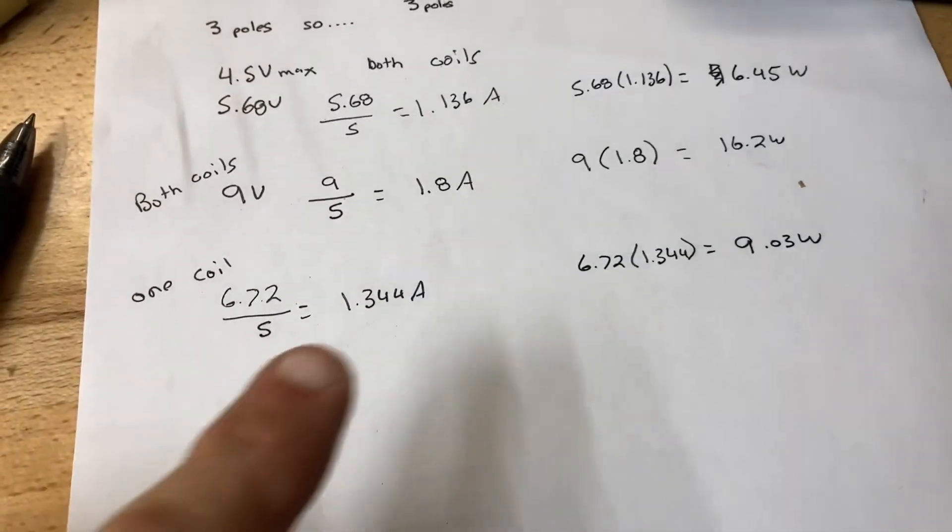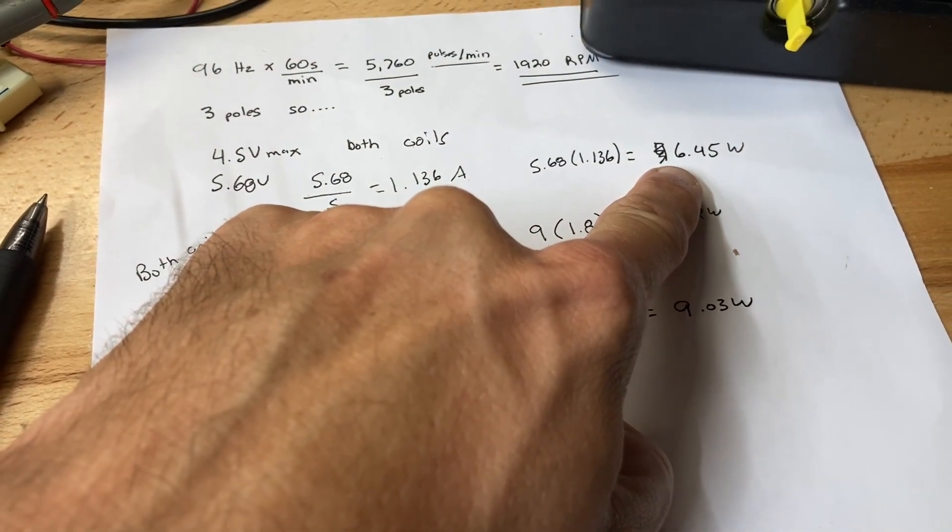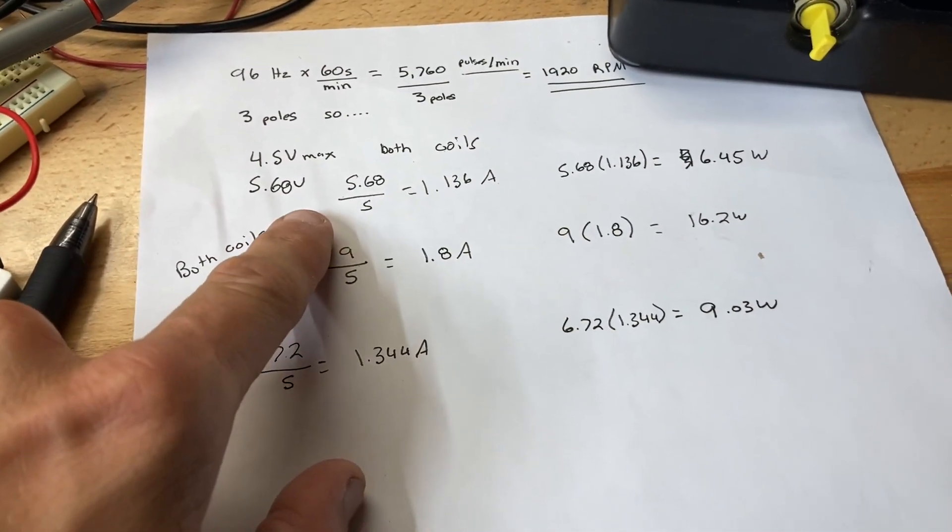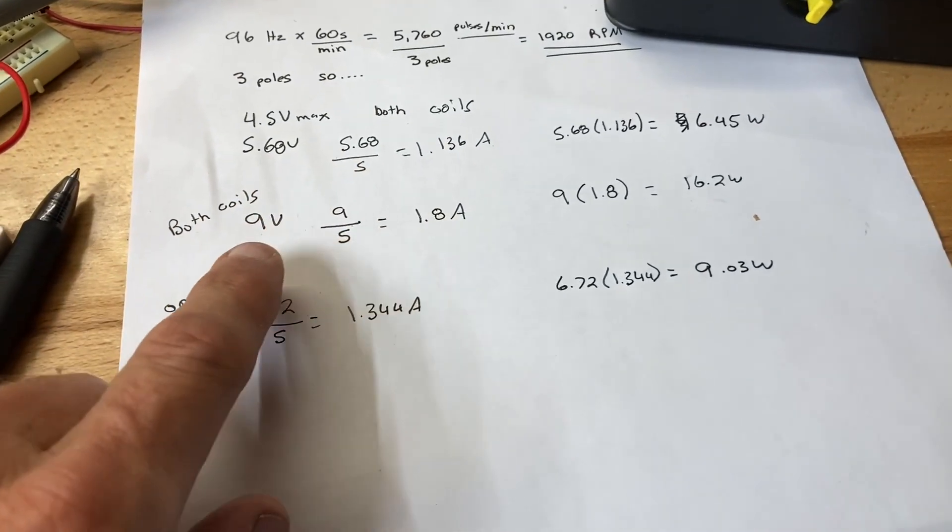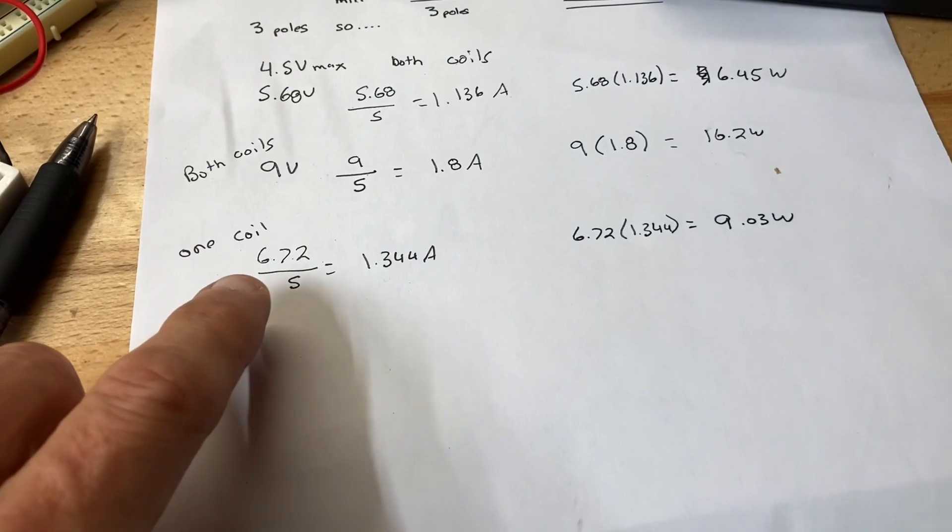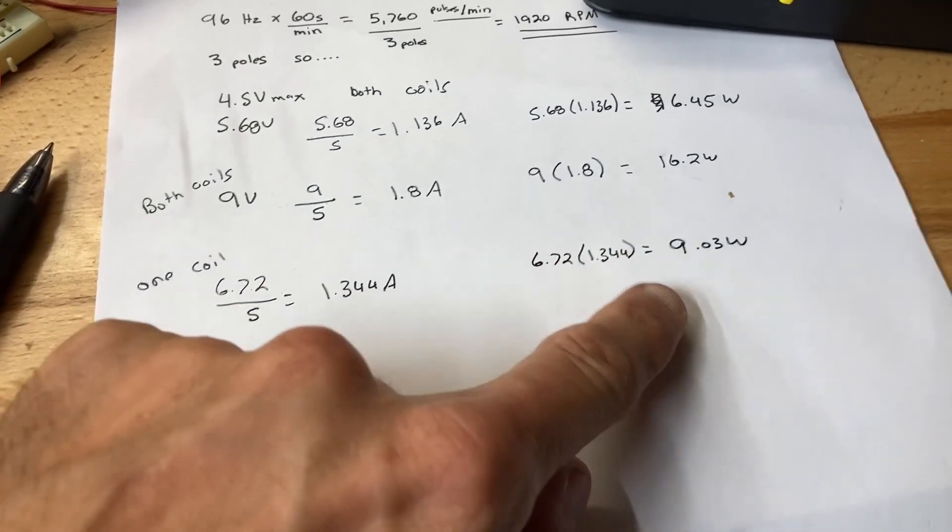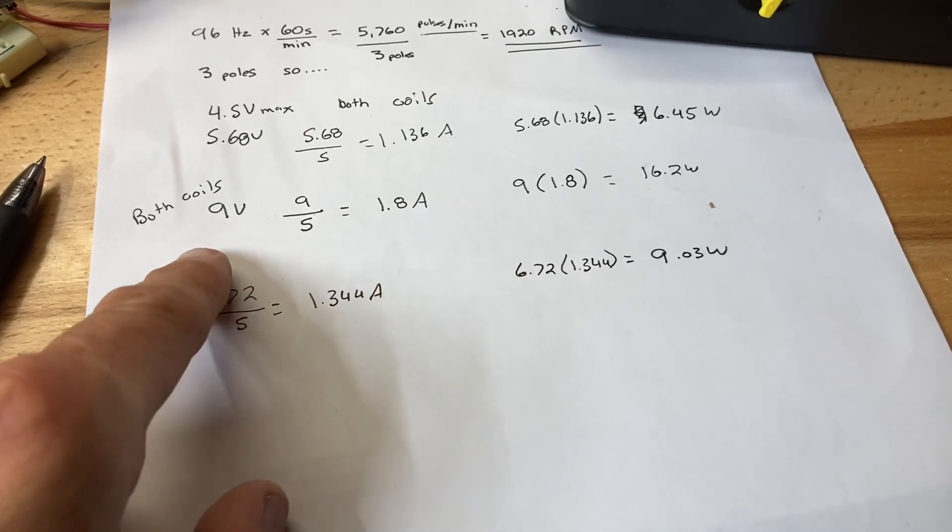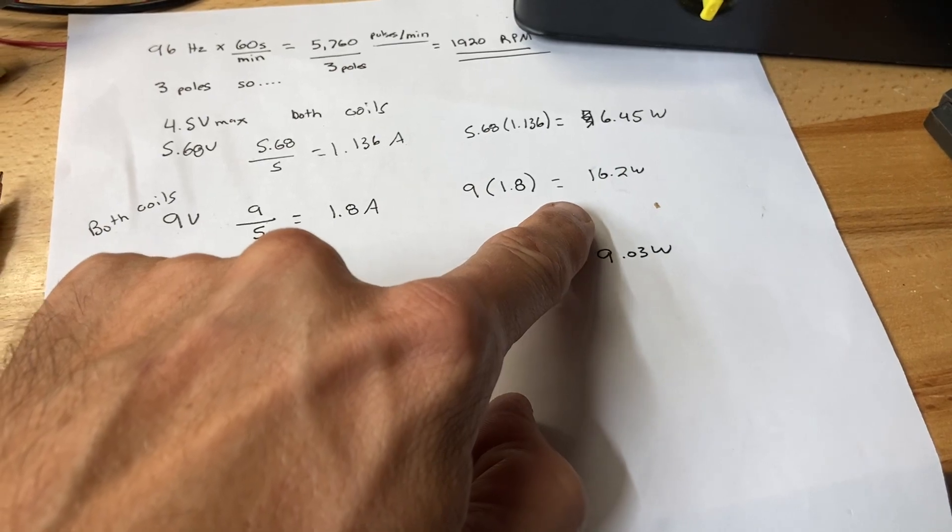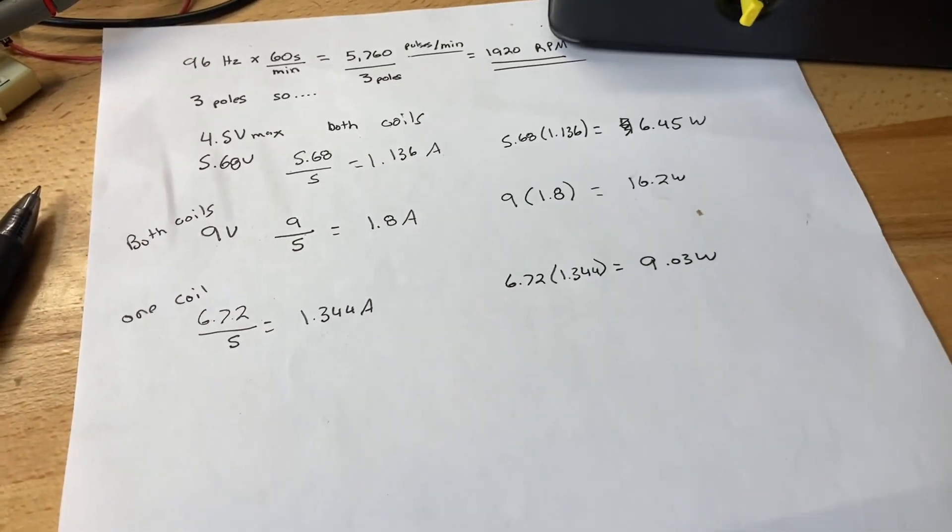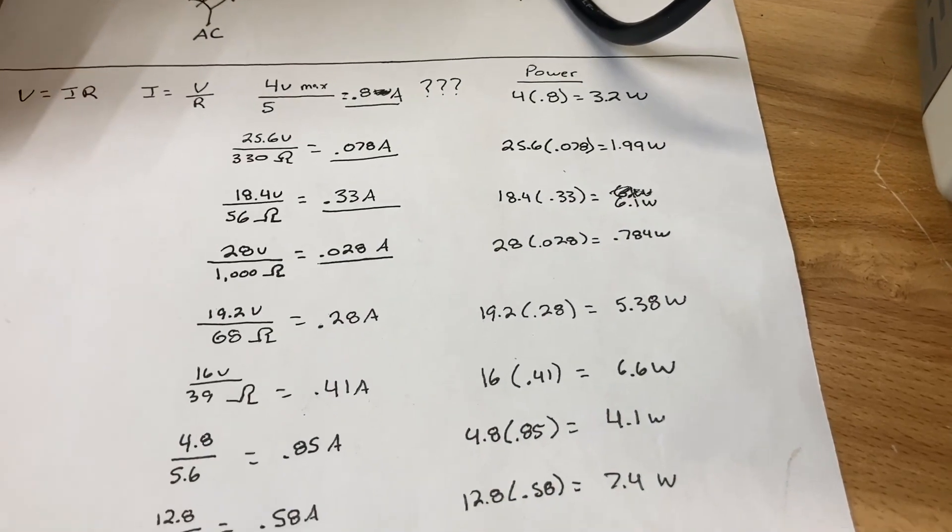In conclusion, when I used both coils on the NEMA 17 at 6.45 watts, the voltage was 5.68 volts. Single coil on the NEMA 23, I got 6.72 watts at 2 volts which equals 9 watts. Both coils, 9 volts equals 16.2 watts, all using the same 5 ohm resistor.